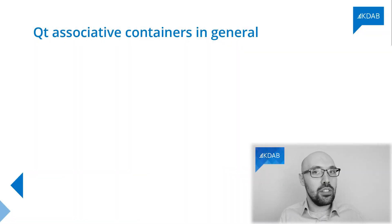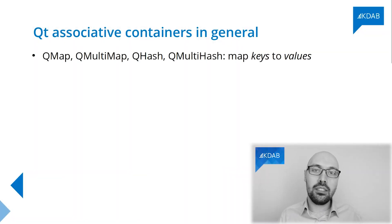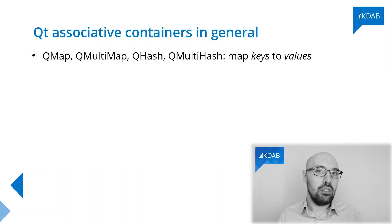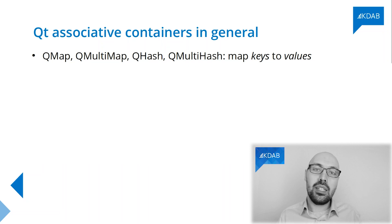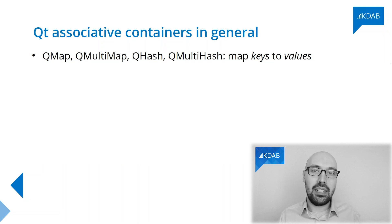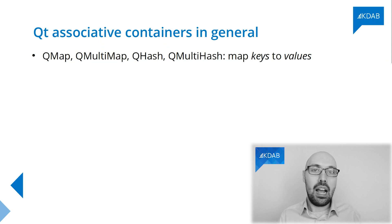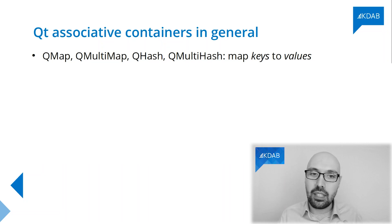What is an associative container? An associative container is a container that simply maps keys to values. Those are containers that are a bit different from sequential containers — containers in which you access by index or by position. Associative containers are accessed by giving a key of an arbitrary data type and retrieving the value which corresponds to that key.